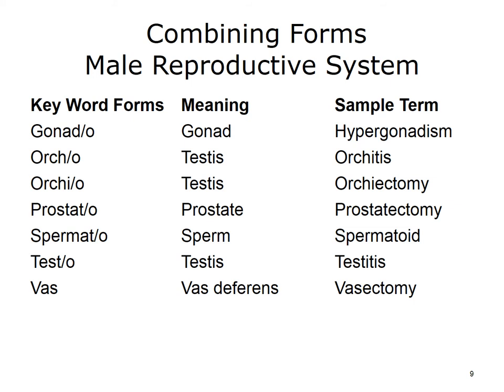Here are some key word parts related to the male reproductive system, along with their meanings. In the third column, you can see some of the medical terms that we can create by combining word parts. You should return to the online medical dictionary to hear the pronunciation and to become familiar with the meaning of the created terms.